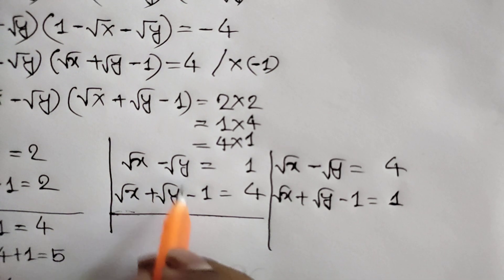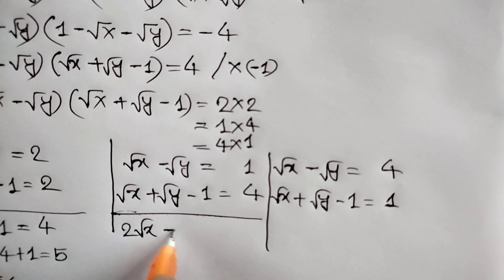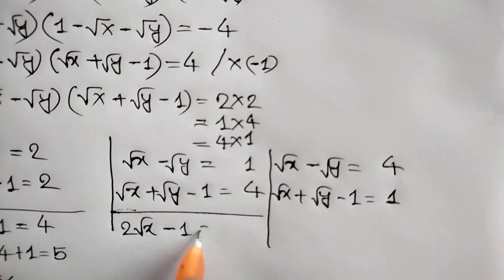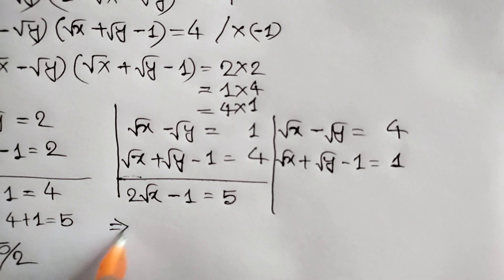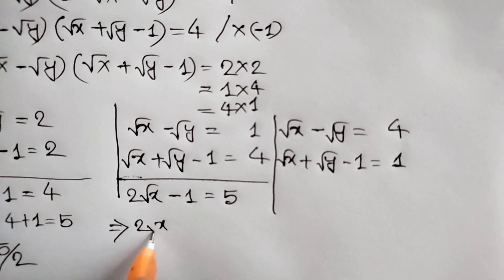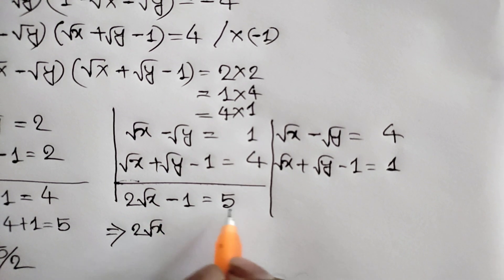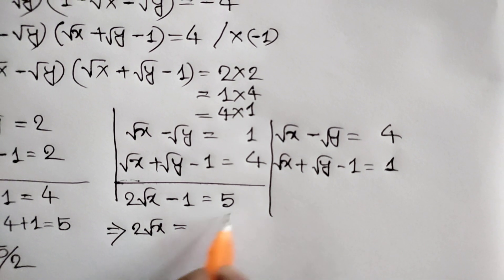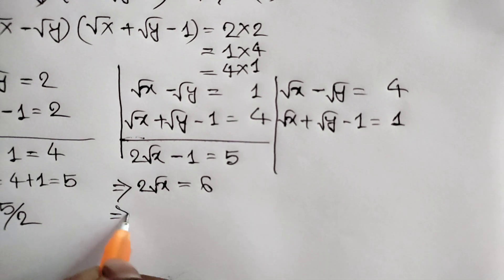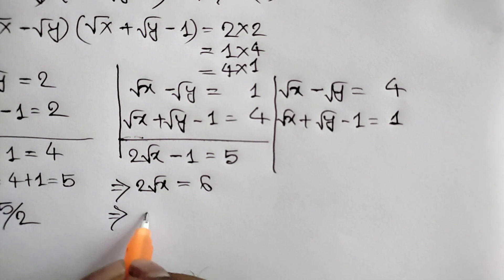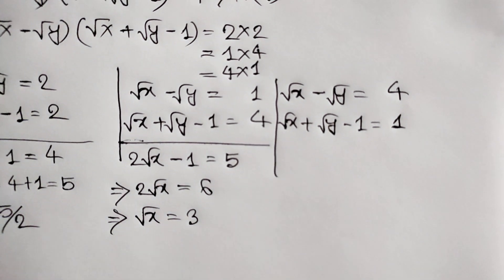Now adding the second pair of equations we will get 2 square root of x minus 1 is equal to 5, or taking negative 1 to the right side we get 5 plus 1 is 6, and dividing both sides by 2 we will get square root of x is equal to 3. So finally the value of x is equal to 9.